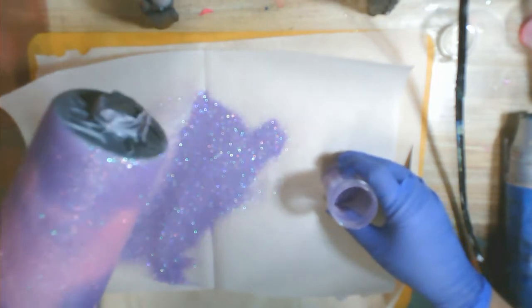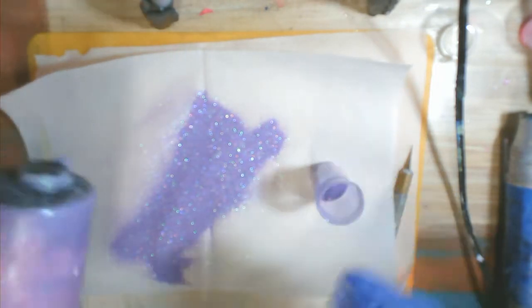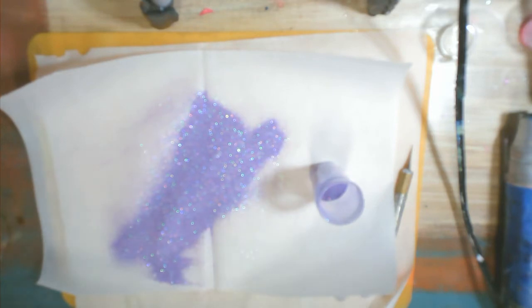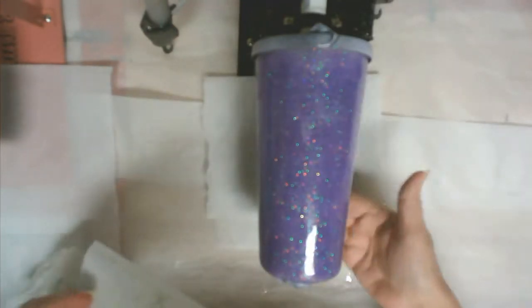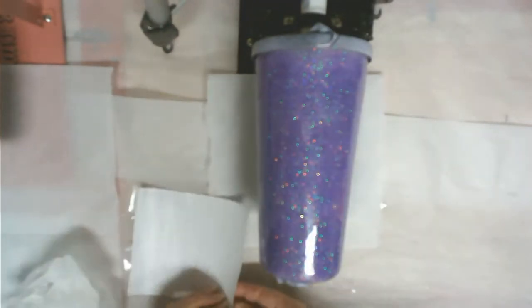It's looking good. I'm going to let this set overnight and then I'm going to come back and put a very thin layer of resin over the top of that glitter, so that it secures it in there and gives me a smooth surface for my vinyl that I'm fixing to put on there.